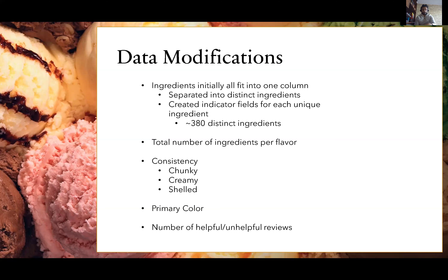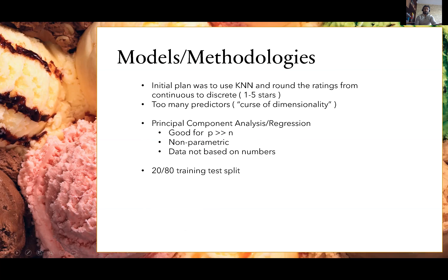I also added total number of ingredients, consistency, and primary color. Consistency and primary color were not in the dataset — I visually pulled that from the provided images. Chunky meant anything with chunks in it, creamy meant it didn't, and shelled meant like a chocolate shell around a stick of ice cream. Primary color — sometimes you get ice cream with multiple colors like Neapolitan, which has pink, white, and brown, so I said 'multi' for that.